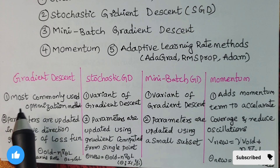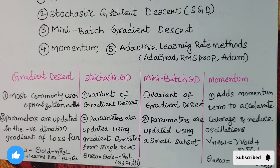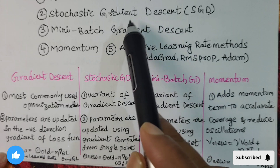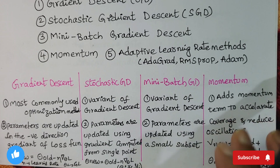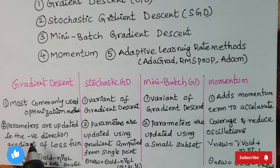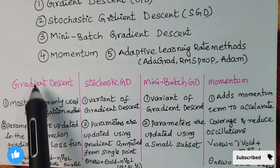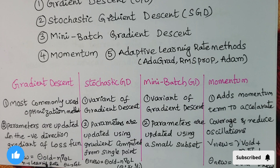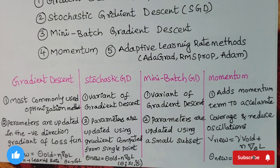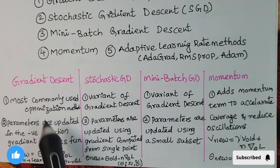Gradient descent is the most commonly used optimization method. Parameters are updated in the negative direction using the formula: θ_new = θ_old − η·∇_θ L, where η is the learning rate.